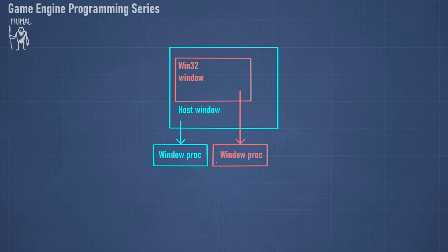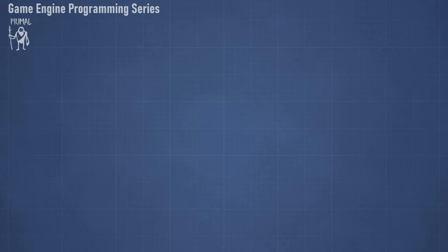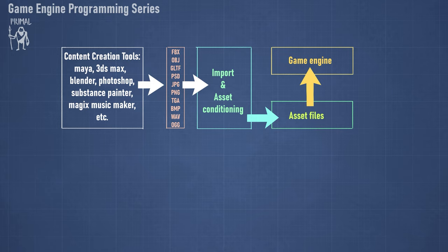Let's have a high-level overview of the asset pipeline. The content that's used in games is in most cases created using a content creation tool, although game assets can also be generated procedurally. Most of the content in a typical 3D game is created using software best suited for that type of content — for instance, Maya, Blender, and 3DS Max for 3D models and animations, and Photoshop and Substance Painter for textures and images.